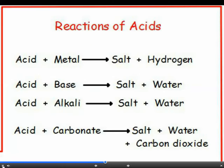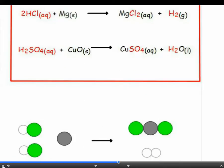Acids do loads of reactions. Acid and metal makes a salt and hydrogen; acid and base make salt and water; and acid and alkali — which is just a type of base, remember — they react to make a salt and water too. There are some equations with state symbols, as they help us to work out what we would see in a reaction.